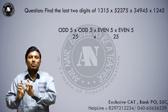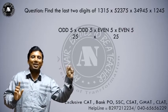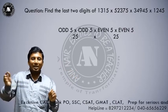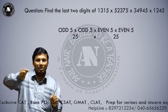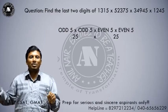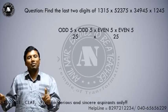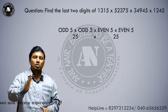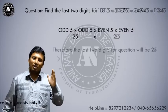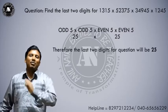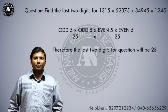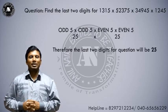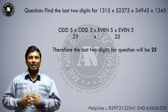Now we have 25 into 25. Here 2 is an even number — it is an even number ending with 5, multiplied by another even number ending with 5. Even 5 into even 5: the last two digits will be 25 for this question.